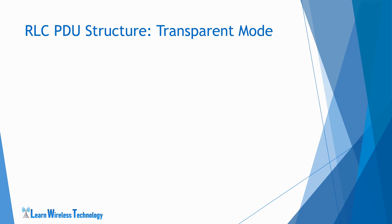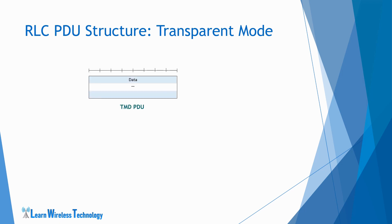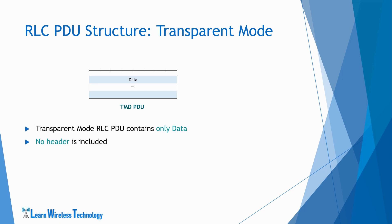Now we will see the RLC PDU structure in different modes. Starting with the transparent mode PDU structure: as you can see, it contains only data and no header is included in the PDU.